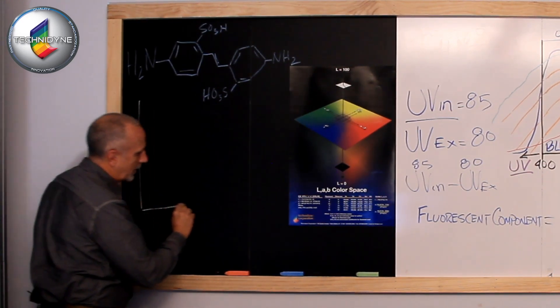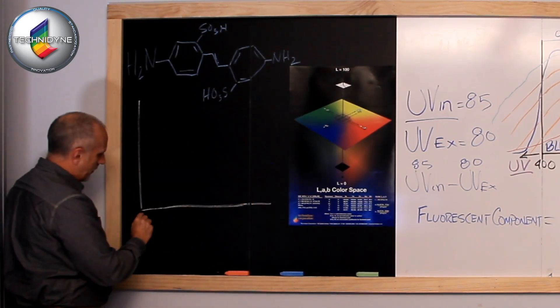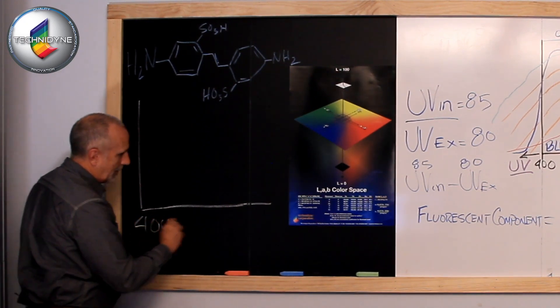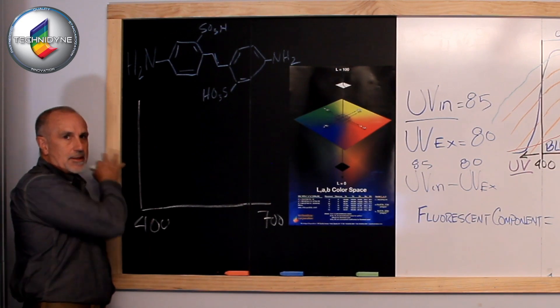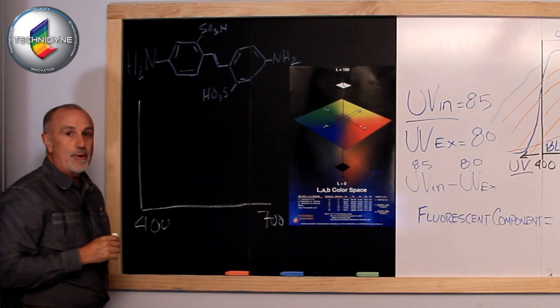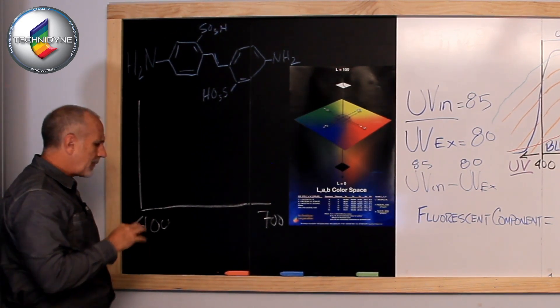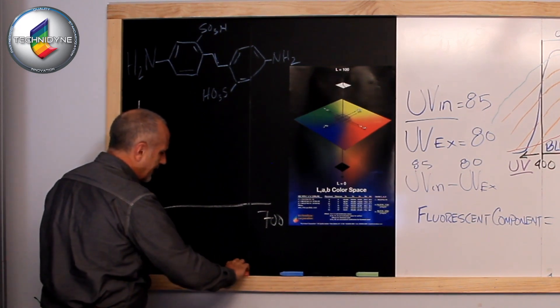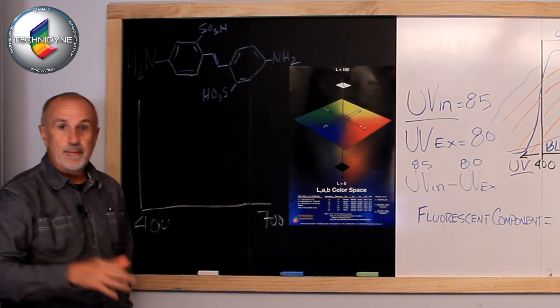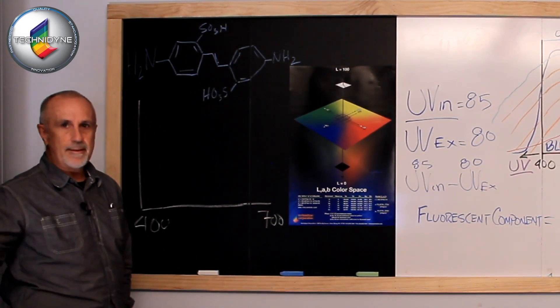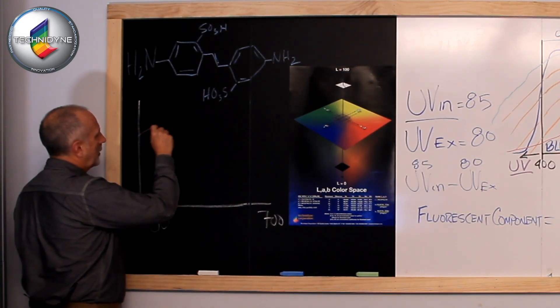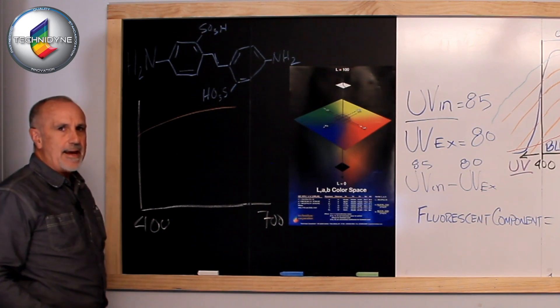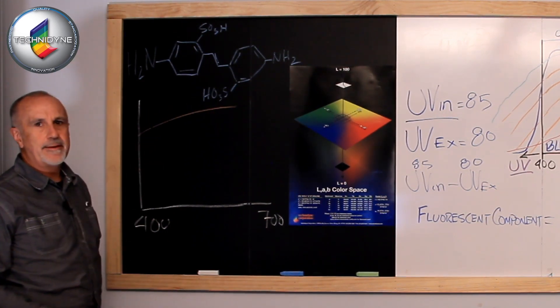We're going to draw up our favorite chart here. We've got 400 nanometers out to 700 nanometers, and we're talking about this UV energy that sits below 400 nanometers. If I've got a typical sheet of bleached pulp and I've made a paper out of it or a hand sheet out of it, it would have a curve that looks something like that.